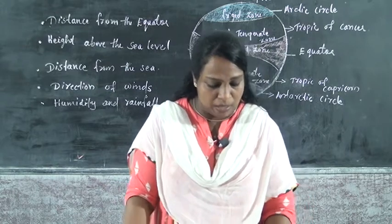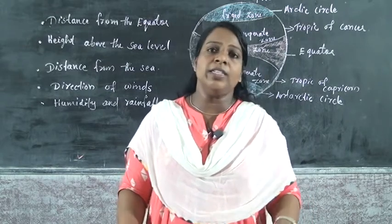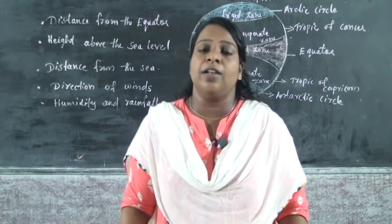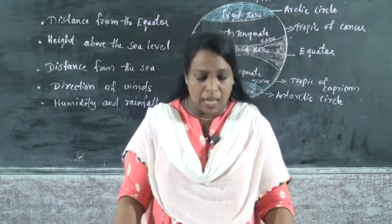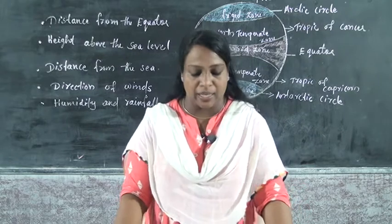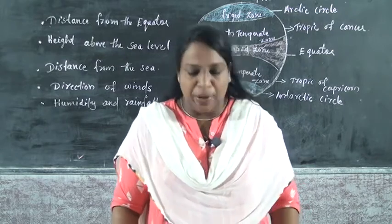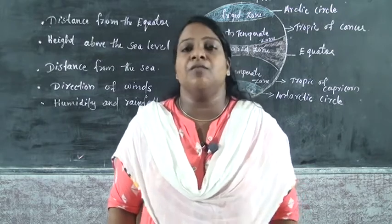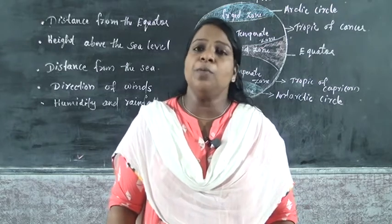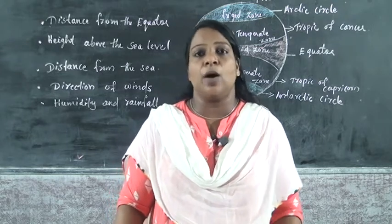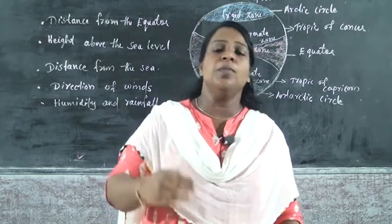The second point is height above the sea level. How does height above sea level influence the climate? The place located at a higher altitude becomes very cold. Higher altitude means height above the sea level.